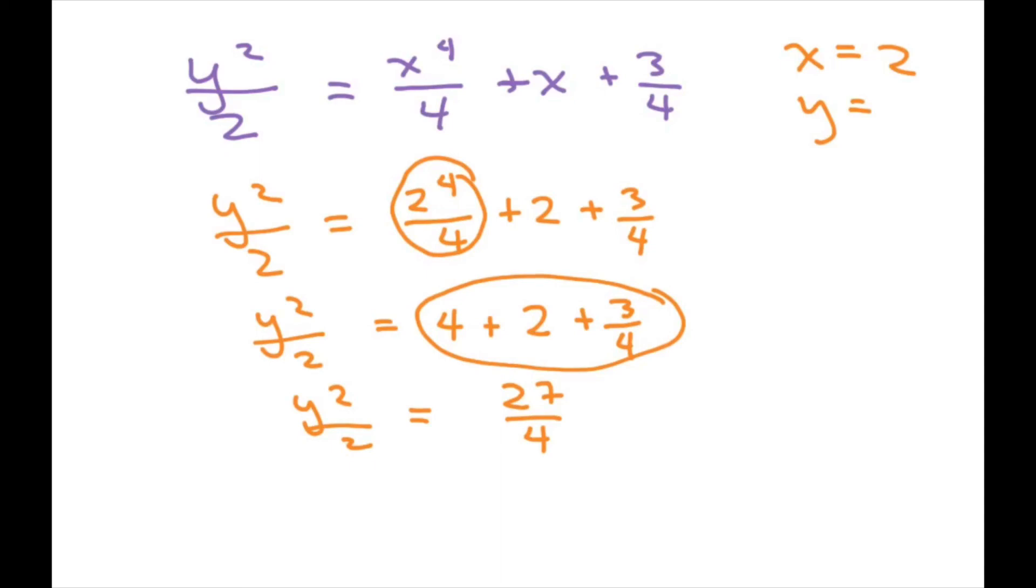Now, multiply both sides by 2. So you get y squared equals 27 divided by 2. So y equals plus or minus. You square root both sides. Don't forget your plus and minus. Square root of 27 divided by 2.